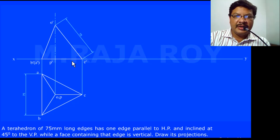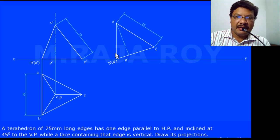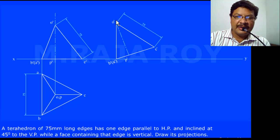Now this first stage position is completed. In the second stage you have to represent the axis inclination. The axis inclination is given indirectly — when you keep this particular face vertical, the axis will automatically make some angle. Here, the face O'B'A' is kept vertical, and then automatically the axis makes some angle with HP.